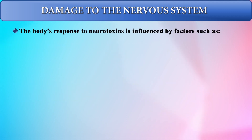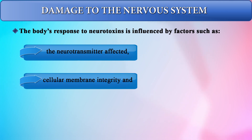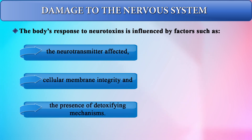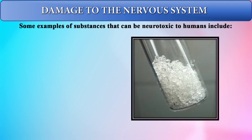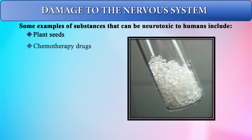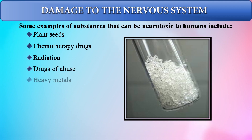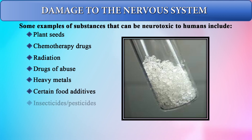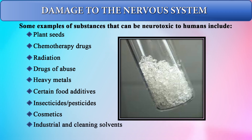The body's response to neurotoxins is influenced by factors such as the neurotransmitter that is affected, cellular membrane integrity, and the presence of detoxifying mechanisms. Some examples of substances that can be neurotoxic to humans include certain plant seeds, chemotherapy drugs, radiation, drugs of abuse, heavy metals, certain food additives, insecticides and pesticides, cosmetics, and industrial cleaning solvents.